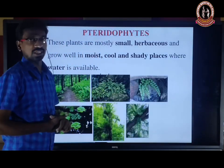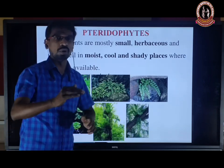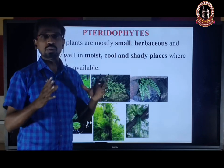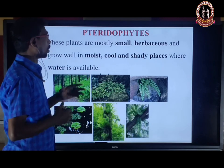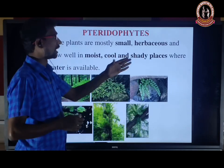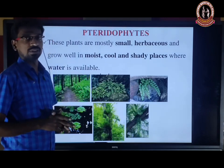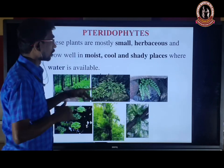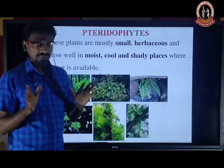Pteridophytes are mostly small herbaceous plants — they grow only to a certain height and do not have a woody stem. They grow well in moist, cold, and sandy places — they are sand-loving plants, but water must be available. It is a first terrestrial plant, but it also grows in moist, cold, and sandy places like Bryophytes.